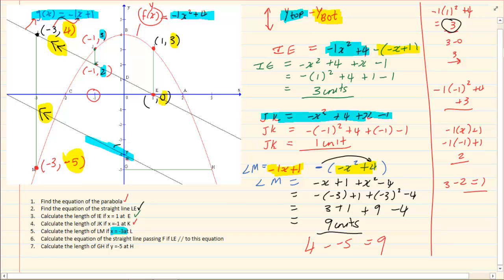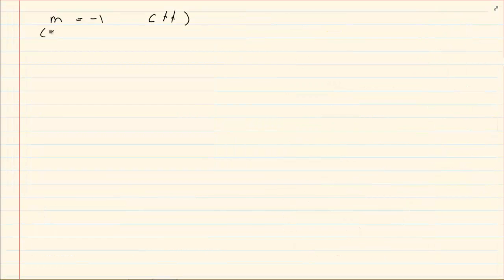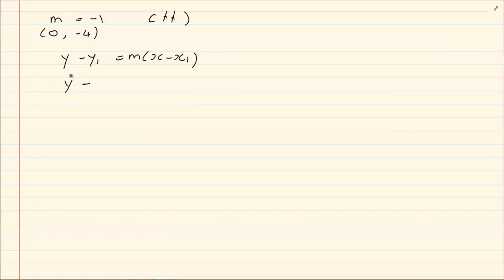They also give me a coordinate: (0, -4). With m = -1 and the coordinate (0, -4), that is all you need to get the equation of a straight line. If you are not familiar with this, go over your grade 9 revision or analytical geometry. Using y - y₁ = m(x - x₁): y - (-4) = -1(x - 0), giving y = -x - 4.